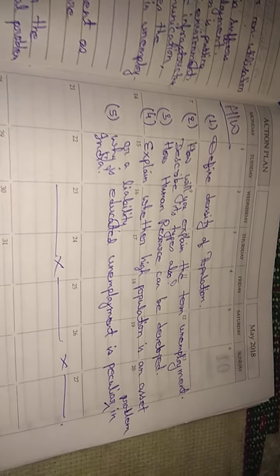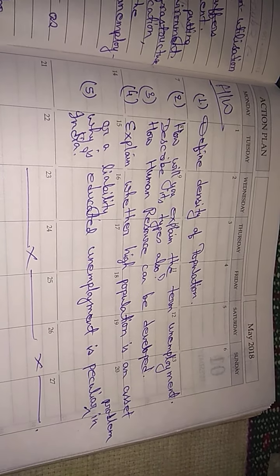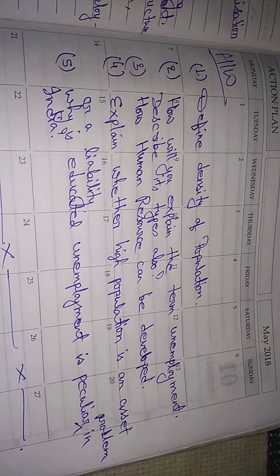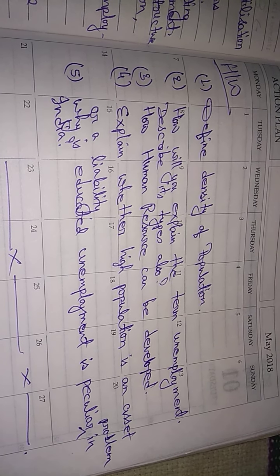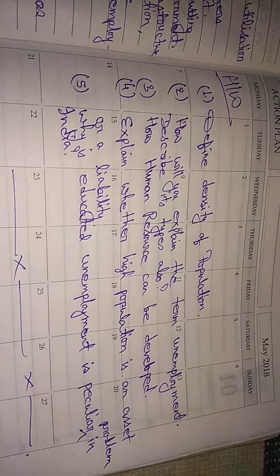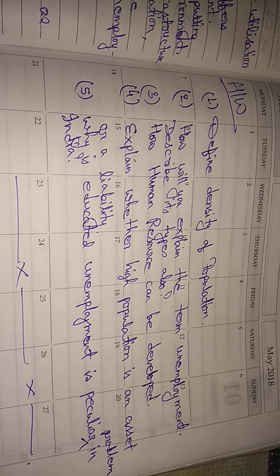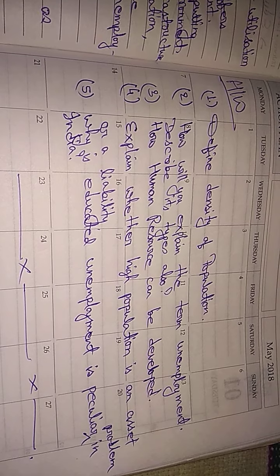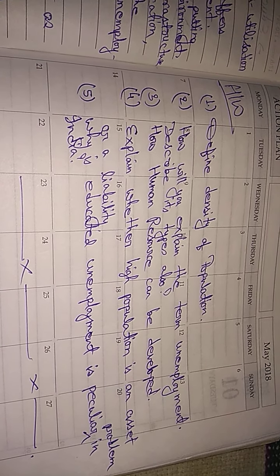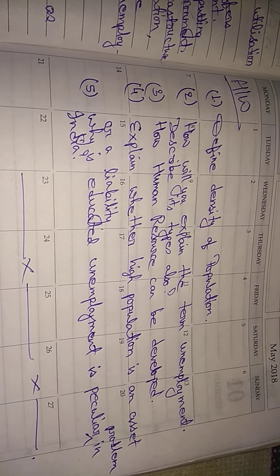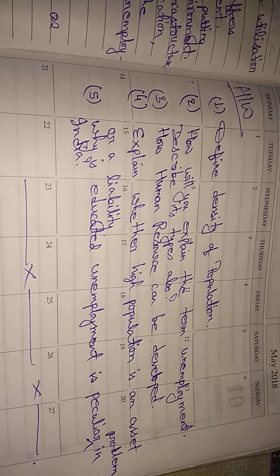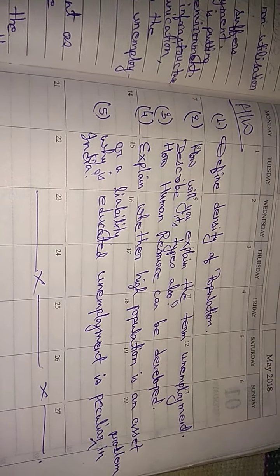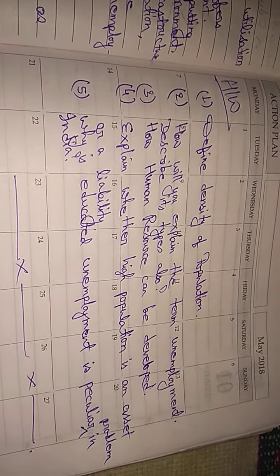I am going to give five homework questions. As you see on the screen: Question 1 — Define density of population. Question 2 — How will you explain the term unemployment? Describe its types also. Question 3 — How can human resources be developed? Question 4 — Explain whether high population is an asset or a liability. Question 5 — Why is educated unemployment a peculiar problem in India? Solve these at home and share your answers through my WhatsApp number given in the previous video.